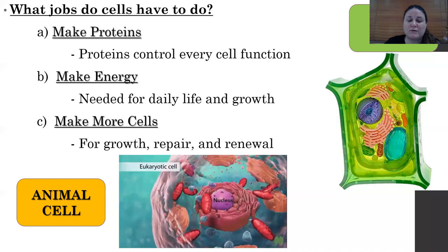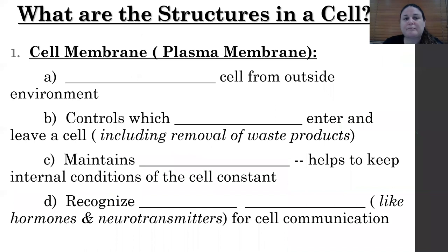What you see at the bottom of your screen is an animal cell, and at the right is a plant cell. That is where we are going to stop for today. Next lesson, we'll be going into all of the different structures within eukaryotic cells.